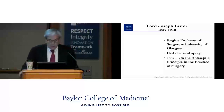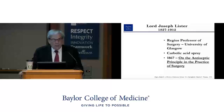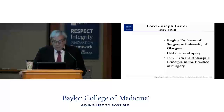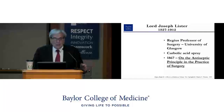Joseph Lister was Regius Professor of Surgery at the University of Glasgow. He had read about Pasteur and knew about fermentation. Dealing as a surgeon with wounds and putrefaction, he came up with spraying carbolic acid to inhibit the growth of what he thought might be bacteria, which he did not actually see. He published this in 1867 on the antiseptic principle in the practice of surgery, which became very important in decreasing the likelihood of surgical infections.